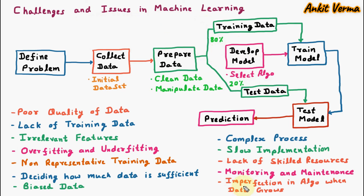The next challenge is imperfection in the algorithm when data grows. Let's assume we have designed a machine learning model after many processes and it is working fine. But we are not sure that as we keep on increasing the data, the model will continue to perform well. Whenever data is growing, the algorithm may have imperfections. This is a challenge in machine learning.